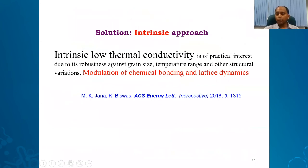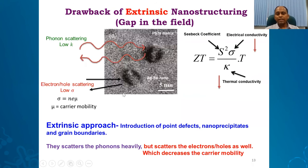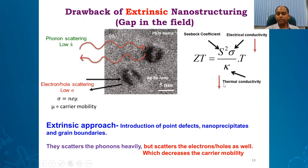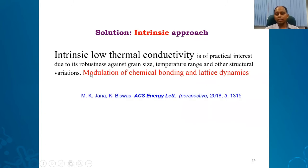The solution — and this is the topic of today's talk — is to create intrinsically low thermal conductivity. This is of practical interest due to robustness in grain size, temperature range, and other structural variations. Rather than using foreign nanostructures, we now want systems where no nanostructuring, mesostructuring, or doping is needed but low thermal conductivity is intrinsic. To achieve this, we have to tweak chemical bonding — play with real chemistry to tune chemical bonding and lattice dynamics.